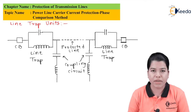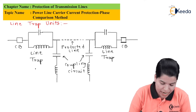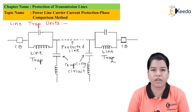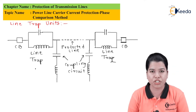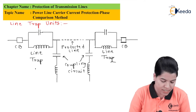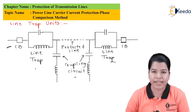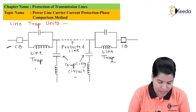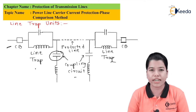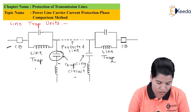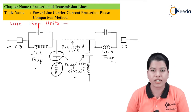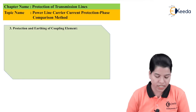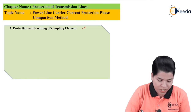This is the basic circuit for the line trap. The line trap is present between both ends of the transmission line which is protected. It is connected between the circuit breaker and the coupling circuit. These are the coupling capacitors which are connected in series with the low inductance reactors.